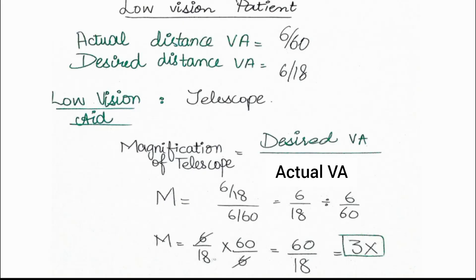Here we have a case: a patient comes to you with an actual real acuity of 6/60. The desired distance acuity refers to the distance at which the patient wants to read or work, but is unable to see. Using the Snellen chart for evaluation of the refractive status of the patient's eye, you find that the patient's distance acuity is 6/60.